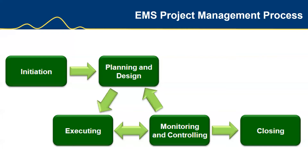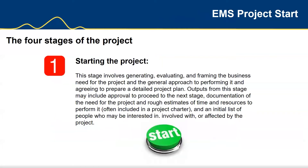Let's get into the four stages of a project. Stage one — starting the project — involves gathering, evaluating, and framing the business needs for the project and the general approach to performing it, and agreeing to prepare a detailed project plan. Outputs from this stage may include approval to proceed to the next stage, documentation of the need for the project, rough estimates of time and resources, a project charter, scheduling, and an initial list of stakeholders involved with or affected by the project.